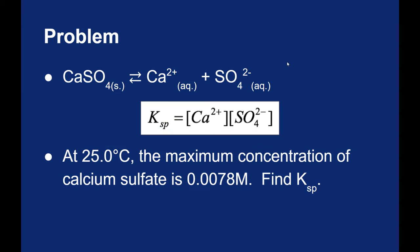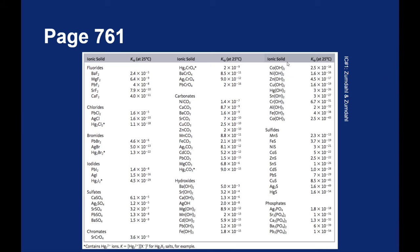Now that we've found the Ksp for one substance, we can take a look at the text and see that there's a whole table of Ksp values. This will come in handy as we take a look at future Ksp problems.